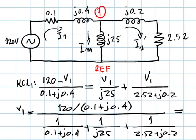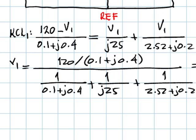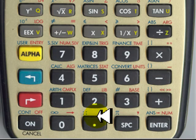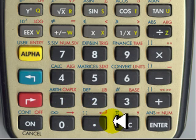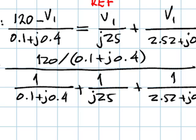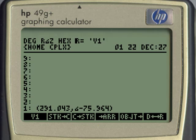First, the numerator. 120. Enter. 0.1, 0.4. Round parenthesis. 0.1, 0.4. Divide. That complex number is the numerator of our expression. It is in polar form because that is the setting of our calculator.